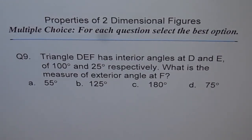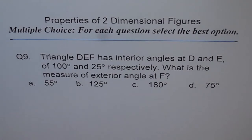Multiple choice questions on two-dimensional figures. Question 9: Triangle DEF has interior angles at D and E of 100 degrees and 25 degrees respectively. What is the measure of the exterior angle at F?